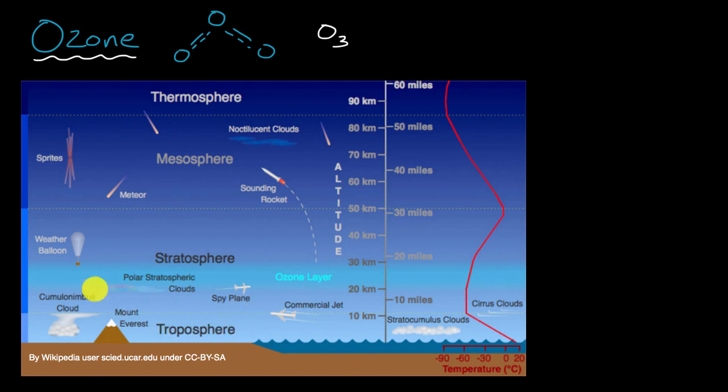We have a troposphere, and then above that, a stratosphere. In the stratosphere, we see this thing known as an ozone layer, which is 10 to 20 miles above the surface of the Earth.